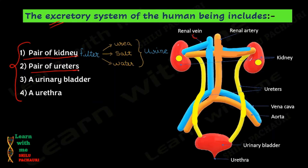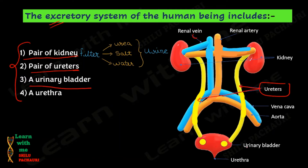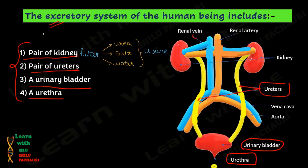The second component is the pair of ureters. As you can see in this image, these yellow-colored tube-like structures are actually the ureters. The function of the ureters is to transfer the urine produced in the kidneys to the urinary bladder. The third is the urinary bladder, which is a muscular bag-like structure completely under our nervous control. Its job is to store urine until we go to the toilet. The fourth component is the urethra — the urine stored in the urinary bladder is removed from the body through the urethra.